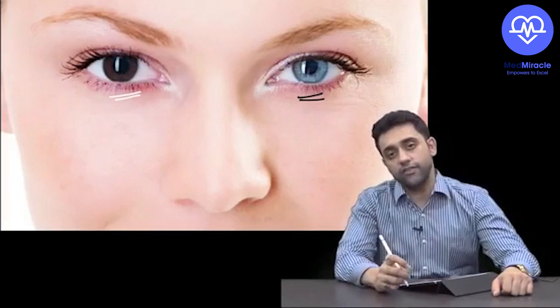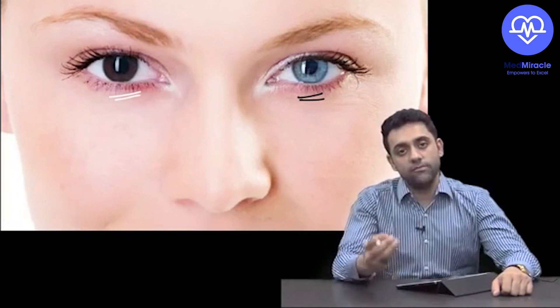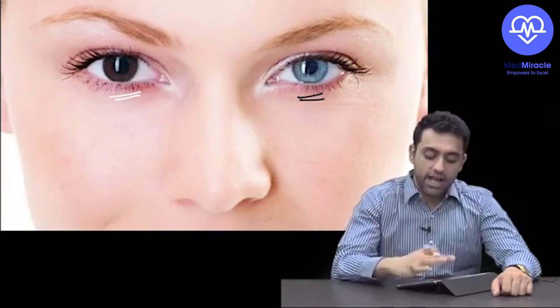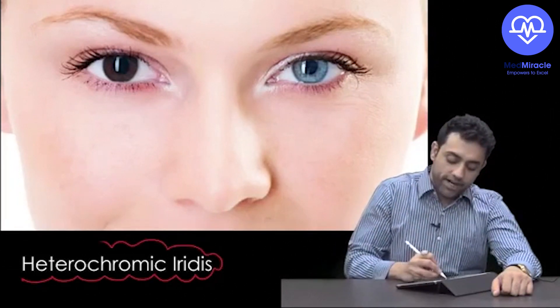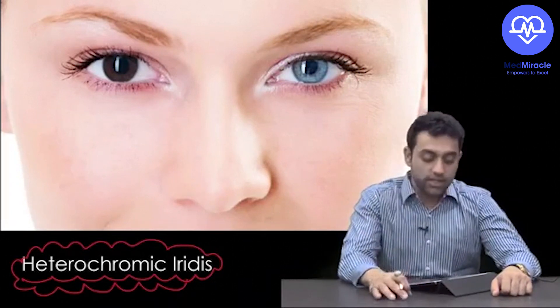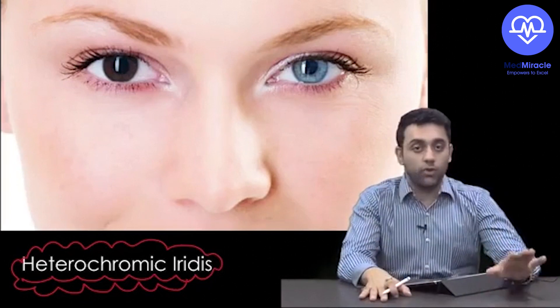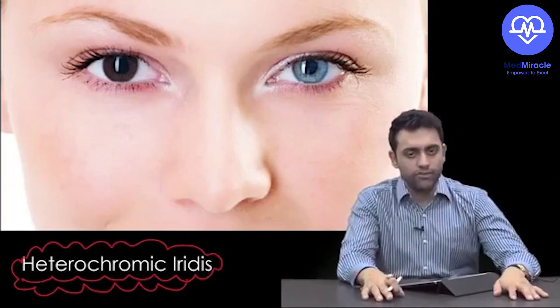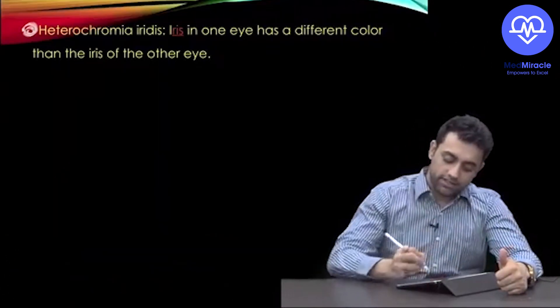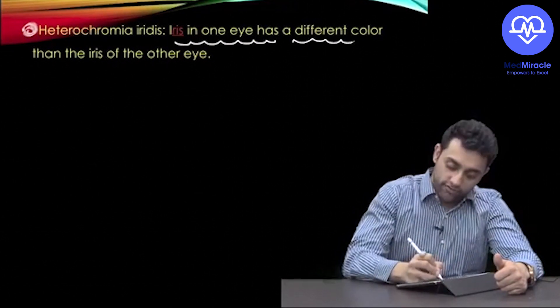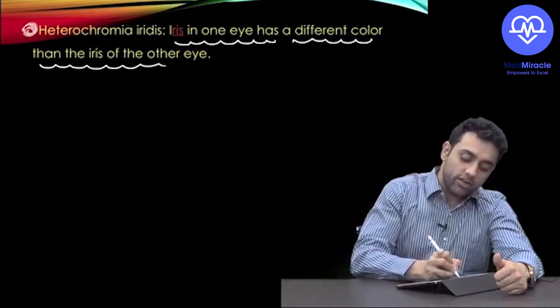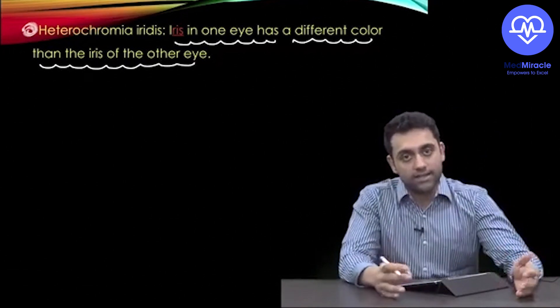Now look at this picture — one iris color is different from the other. This is called Heterochromia Iridis: a change in the color of the iris where one eye has a different color than the other eye.